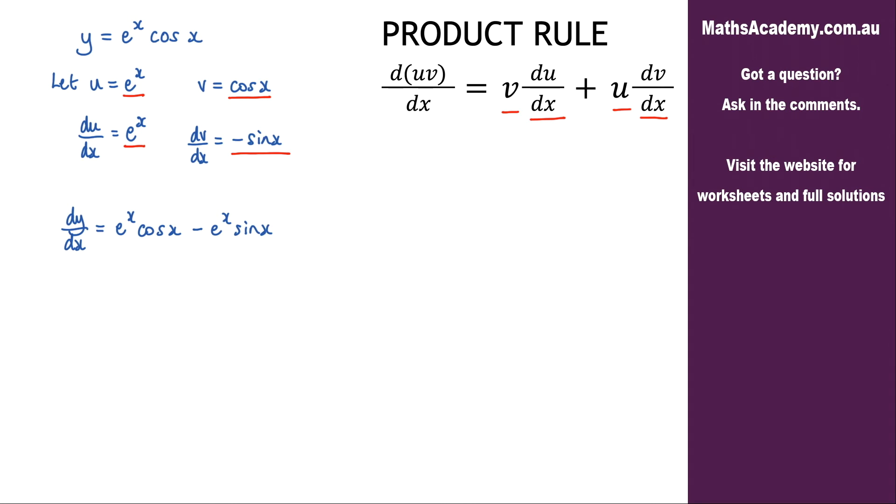Now if you want to you could bring out a factor of e to the x to give e to the x times cosine x minus sine x.